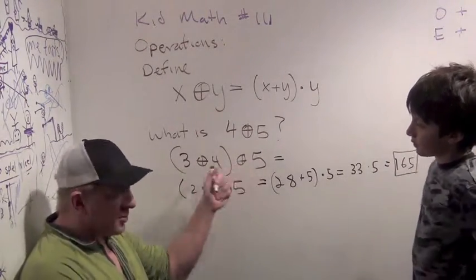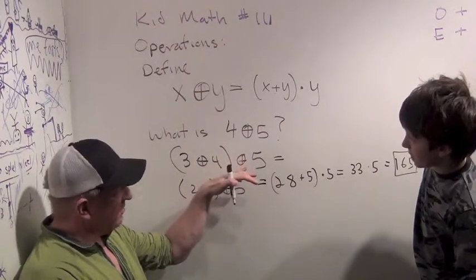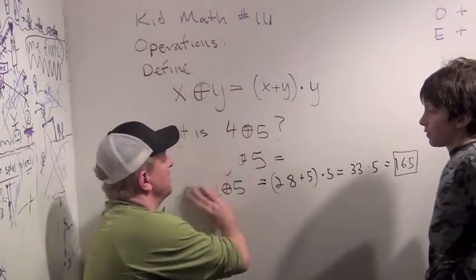Don't try to do all the circle pluses first. Do 3 circle plus 4, like order of operations inside the parentheses first. Okay. Now, one last question.